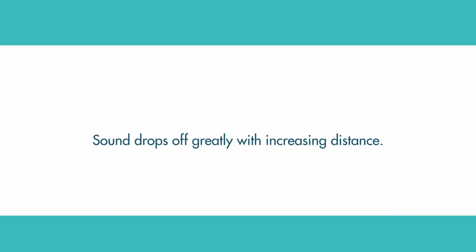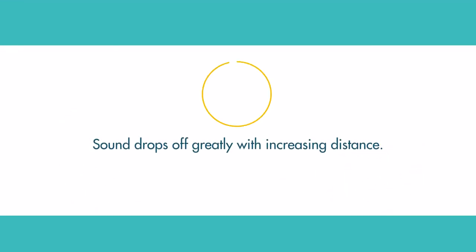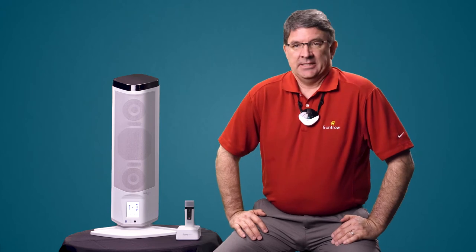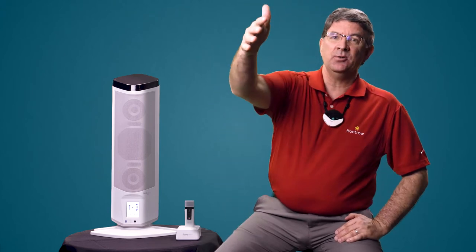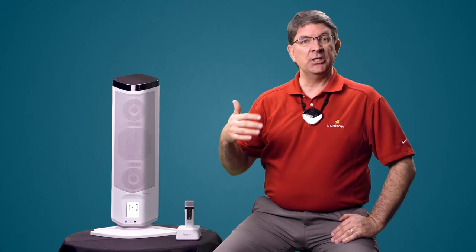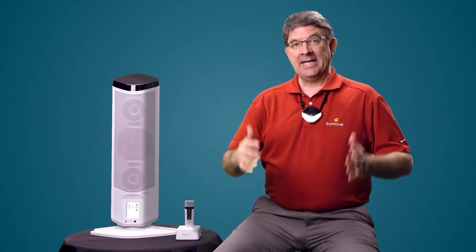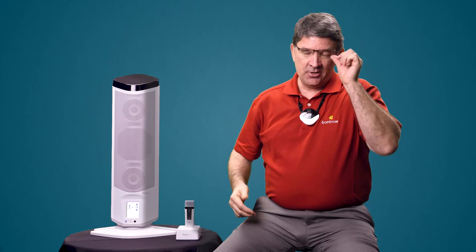Sound drops off with distance - called the inverse square law. Sound decreases up to 50% every time distance doubles. So this means it drops off. That's why we have light throughout the room but sound we don't. But now you do with the Juno.